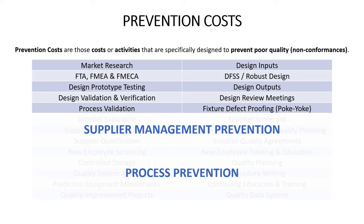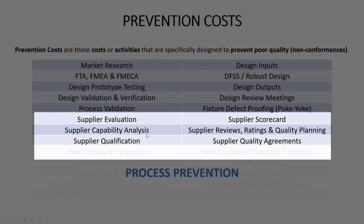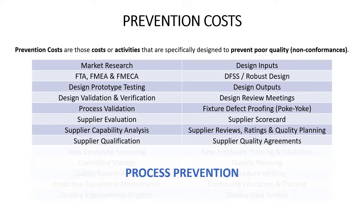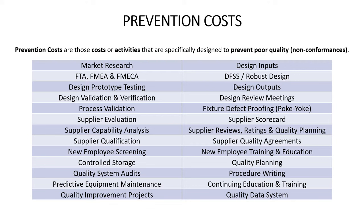Once we go into production, there's a lot we do from a vendor management and process prevention perspective. We evaluate vendors, assess their capability, and ultimately qualify them to produce our product. Over time, we use tools like the supplier scorecard, supplier rating, and supplier quality agreements. Within our own production processes, we do things like new employee screening and training, controlled storage of raw material, the quality planning process, quality system audits, writing procedures, predictive equipment maintenance, continuing education for employees, quality system data, and quality improvement projects — all intended to prevent non-conformances from ever occurring.